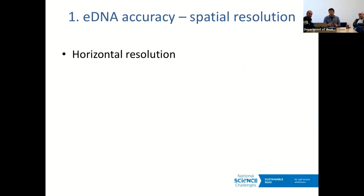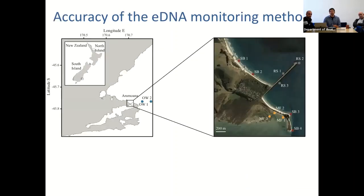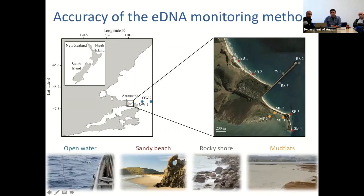The first thing we tested was spatial resolution of the eDNA signal in a marine environment — specifically horizontal resolution. The experiment was set up near Aramoana, near Dunedin, at the exit of Otago Harbour. We chose that site because it has a number of very different environments in close proximity: sandy beach, a man-made mole which is essentially a rocky shore, another sandy beach, and extensive mud flats extending into the harbour. This whole area is barely more than a square kilometre.